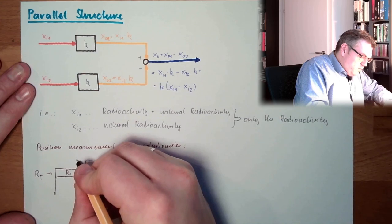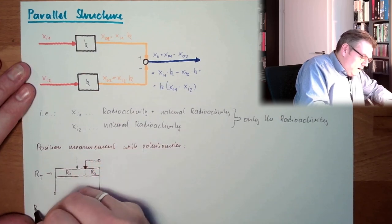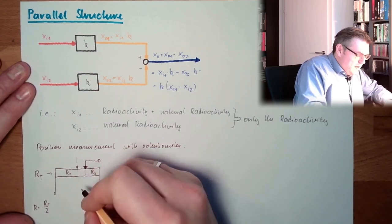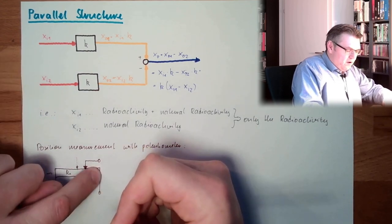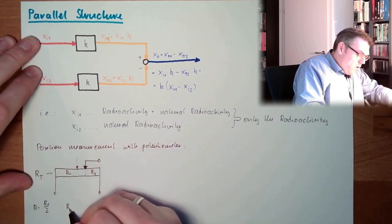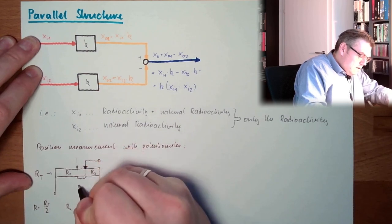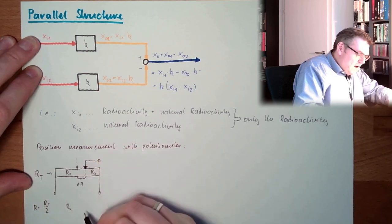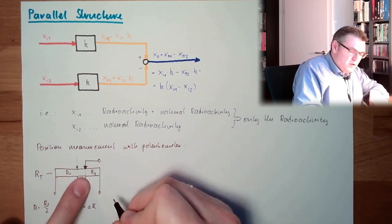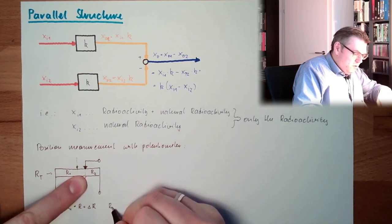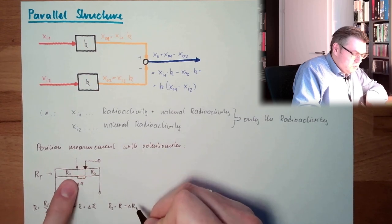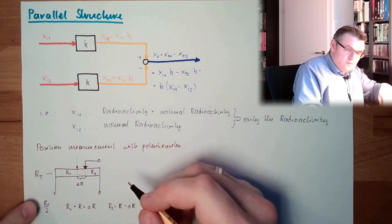If the position would be in the middle, R is Rt half. If the position would be in the middle, I have here R and R. Always the half. R1 and here this is delta R. R1 is R plus delta R because it's getting bigger. And R2 is R minus delta R because this is getting smaller.